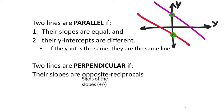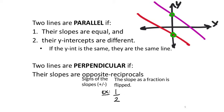Reciprocal means the slope as a fraction is flipped. For example, if you had a slope of one-half, its reciprocal would be two over one, which you could write as two. This goes both ways: if you started with two, you could write it as two over one and then reciprocate it into one-half.